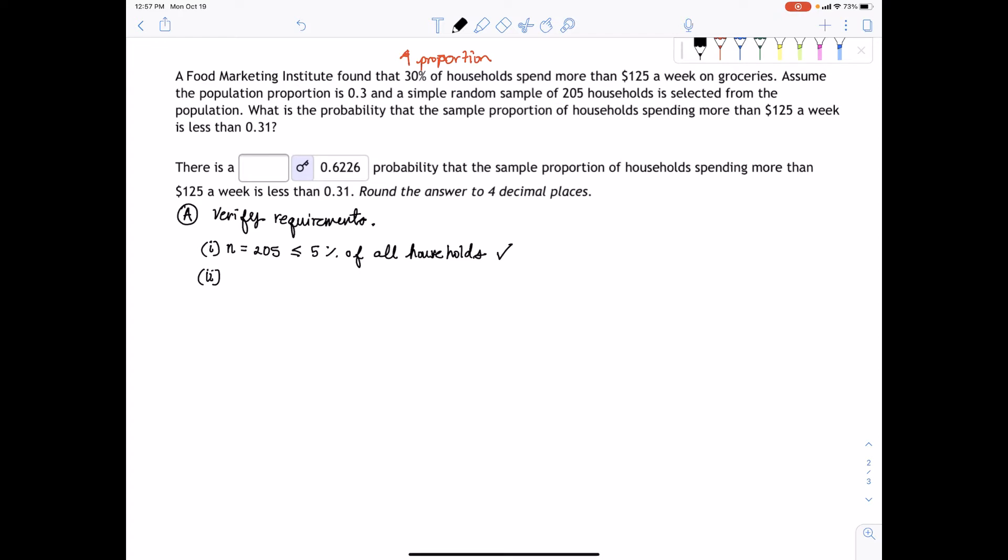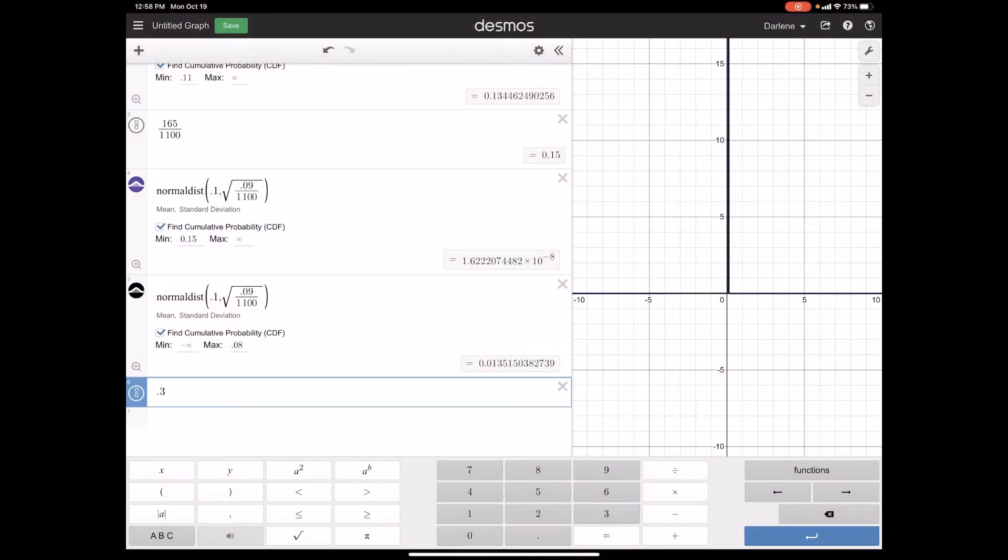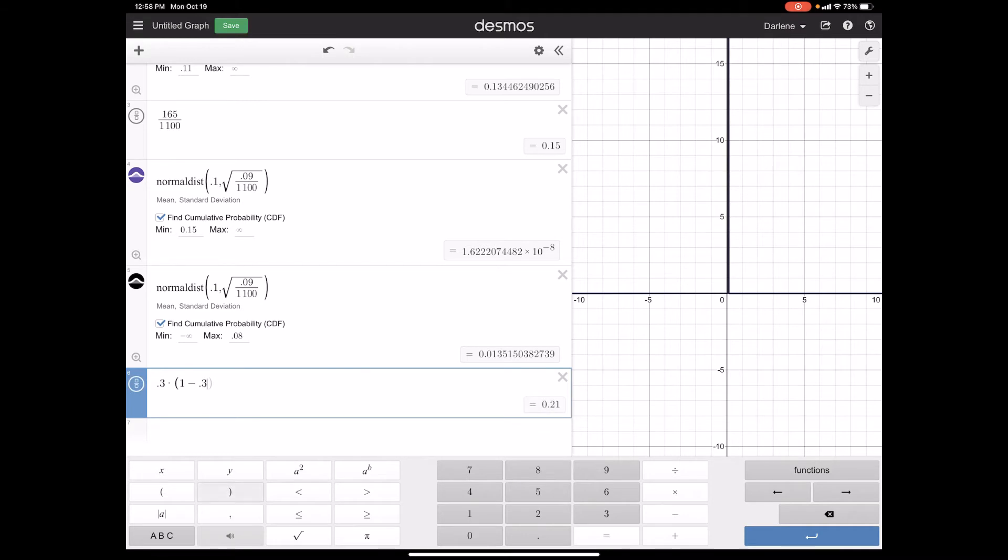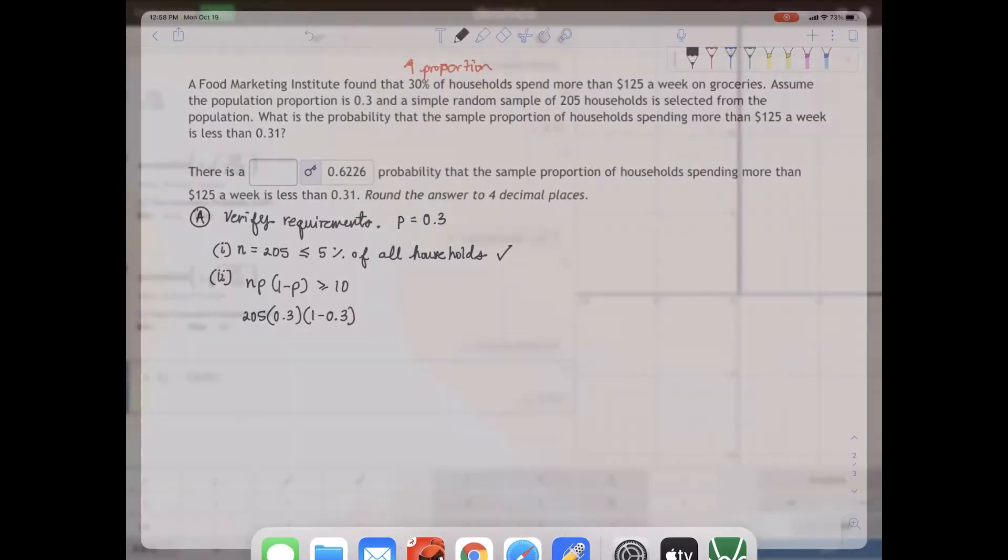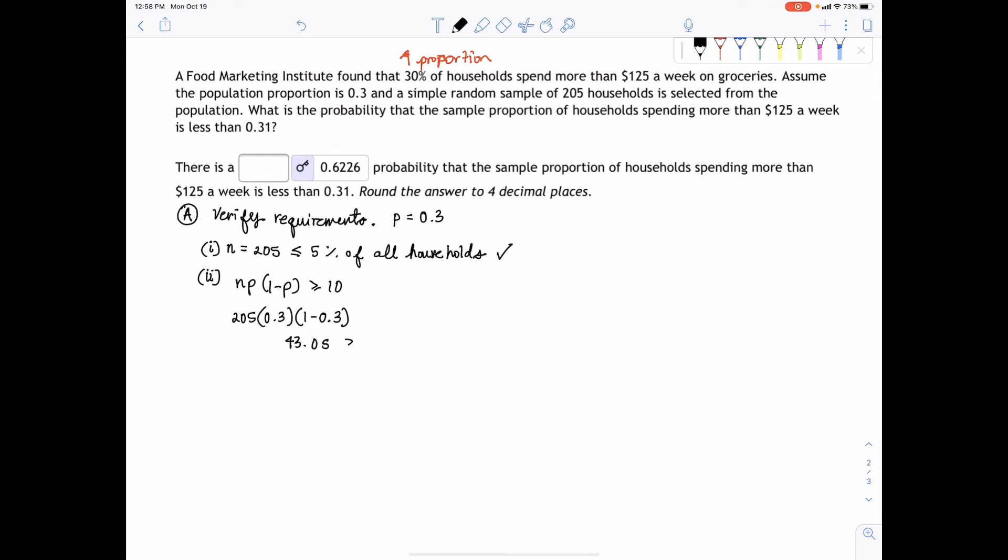The second piece tells us that we need the product of n times the population proportion times its complement has to be greater than or equal to 10. So n equals 205, and the population proportion is 0.3. So we'll have 205 times 0.3 times 1 minus 0.3, which equals 43.05, which is definitely greater than or equal to 10.